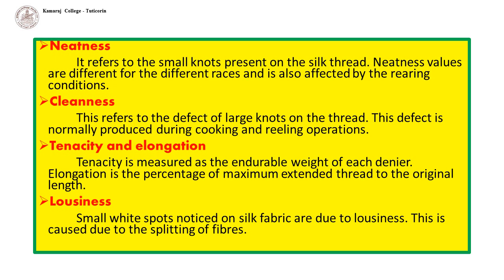Tenacity and Elongation: Tenacity means the grip or strength of the thread, measured as the endurable weight per denier. Elongation is the percentage ratio of the maximum extended thread length to the original length. Loosiness refers to waste or defective fiber in the thread.